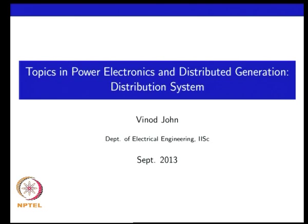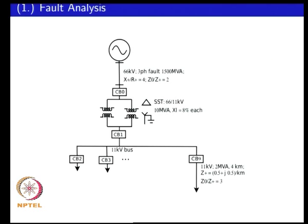We will look at the first problem where you have a 66 kV sub-transmission line feeding a substation consisting of two transformers. You are given the fault MVA at the transformer primary as 1500 MVA, the x-by-r ratio for positive sequence, and the ratio of zero-sequence to positive-sequence impedance which is 2. The transformer rating is 10 MVA, 66 kV slash 11 kV line-to-line, and the leakage inductance is 8 percent each.